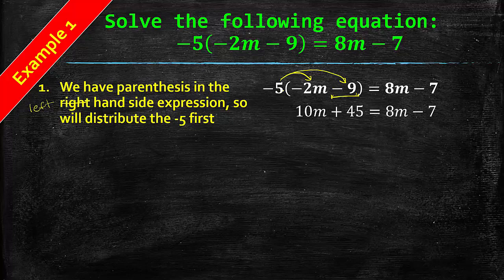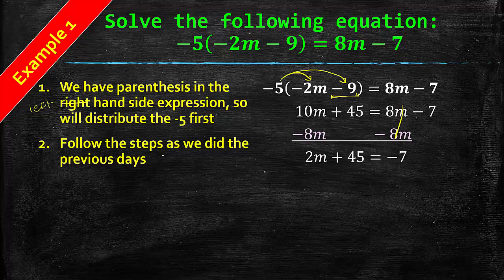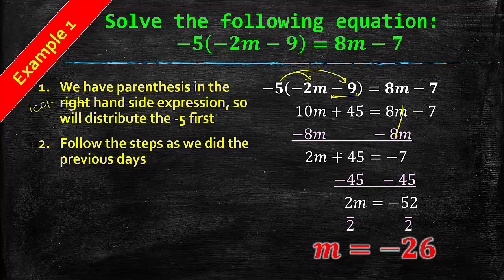Negative 5 times negative 2M is a positive 10M. Remember, two negatives make a positive when you multiply them or divide. Negative 5 times negative 9 is a positive 45. Then you solve the problem like we did in previous days. This one has a variable on both sides, so subtract the smaller one. Subtract 8M from both sides, giving you 2M plus 45 equals negative 7. Then subtract 45 from both sides. You'll get 2M equals negative 52. Finally divide by 2 to get M equals negative 26 for your answer.